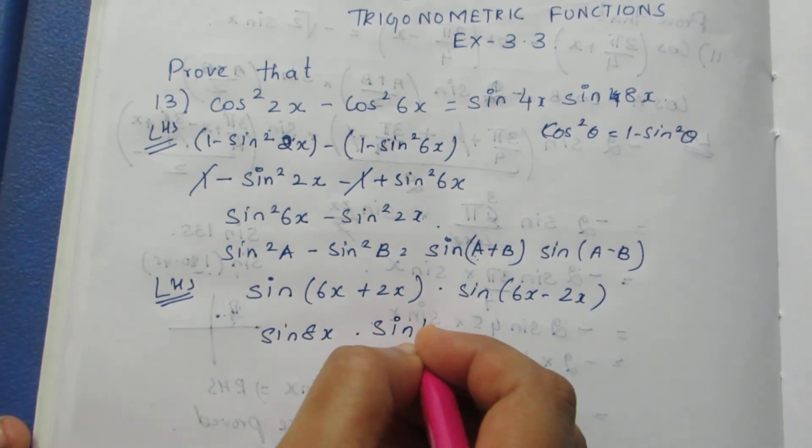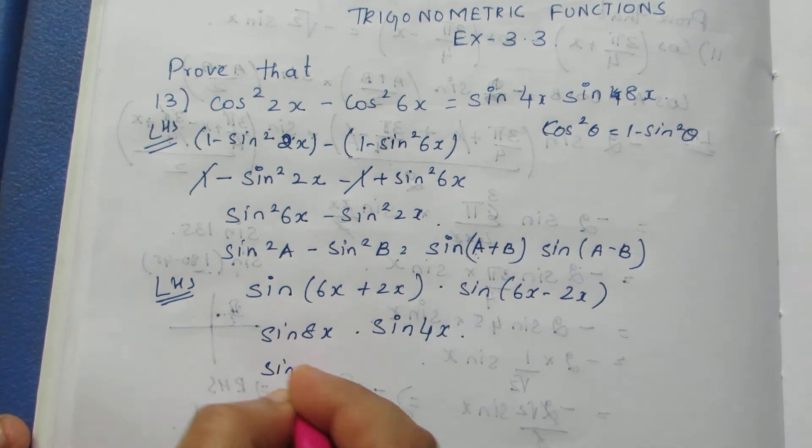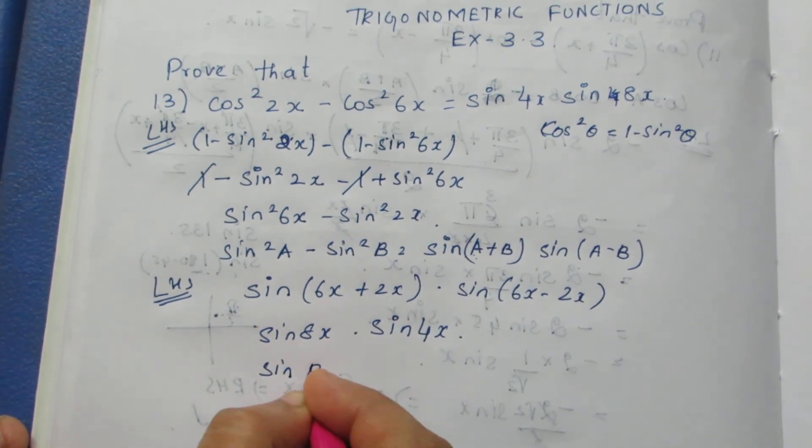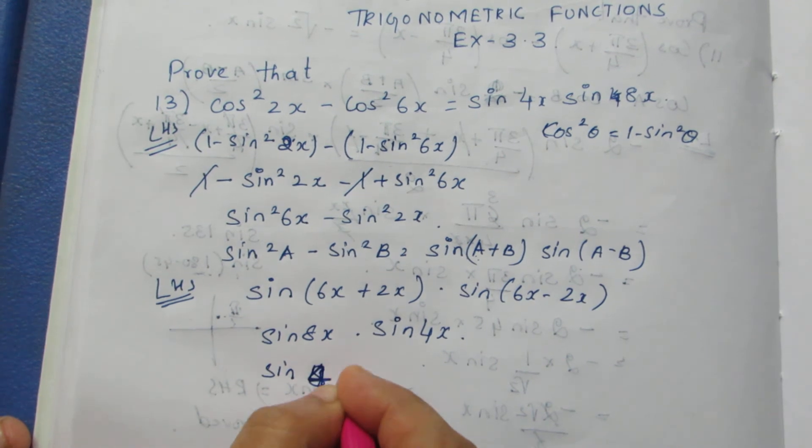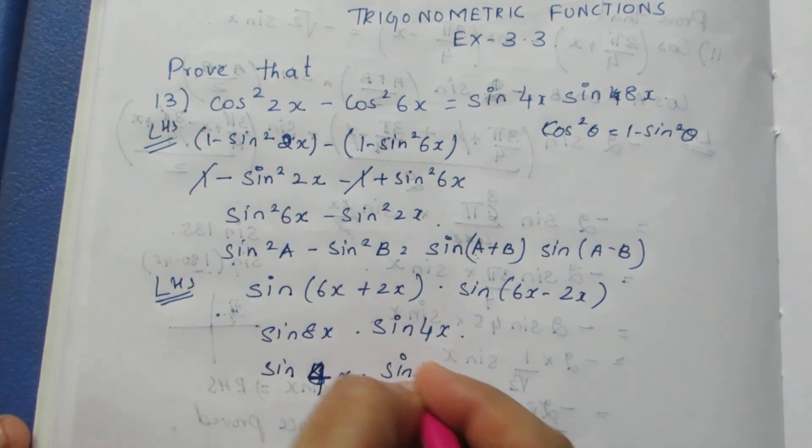Now this becomes sin8x·sin4x, as what they have given. So it becomes sin4x·sin8x.